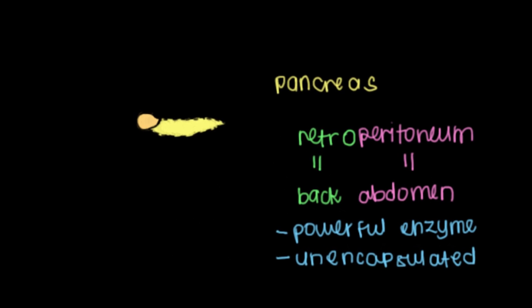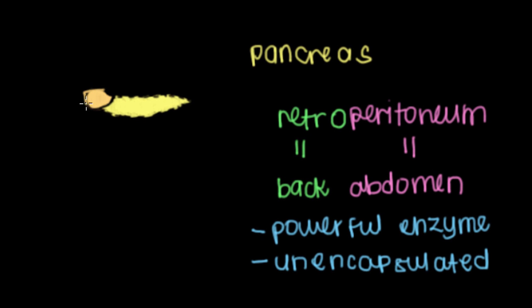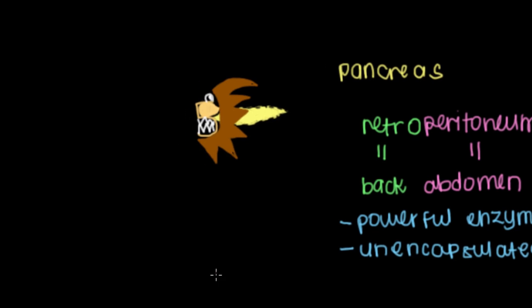No wonder then, the pancreas has sort of earned itself a special nickname. Many physicians consider the pancreas to be the lion of the abdomen because of how important it is, and additionally how powerful the enzymes are that come from it. So just like the lion in the jungle, you don't want to mess with the pancreas. So let's take a few minutes then and talk about what makes the pancreas so special.